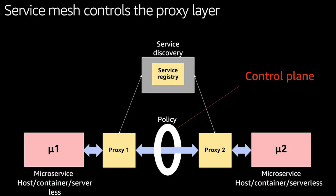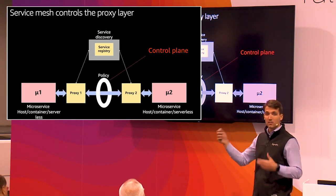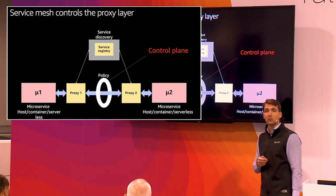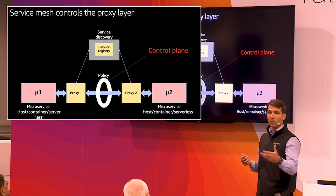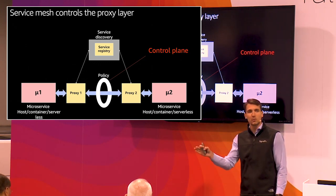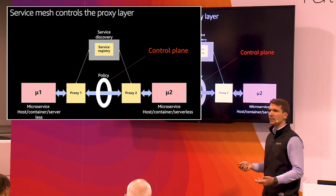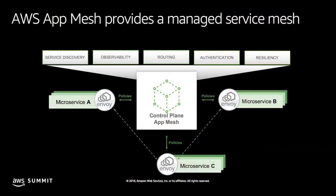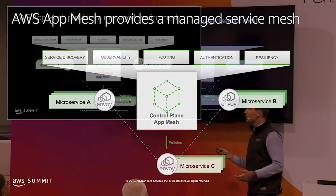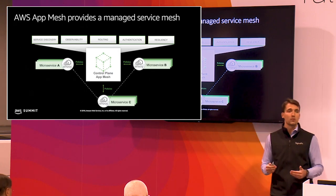The proxy layer is controlled by the control plane. This is commonly known — a lot of folks are using Istio right now, with Envoy for the data plane. You get unified policy control over communications between your microservices, including routing and load balancing. Recently announced and generally available now is AWS App Mesh, which provides all those Service Mesh benefits as a managed service with AWS.